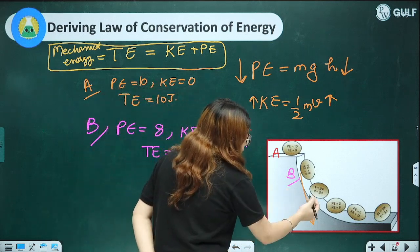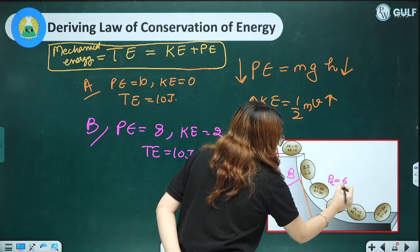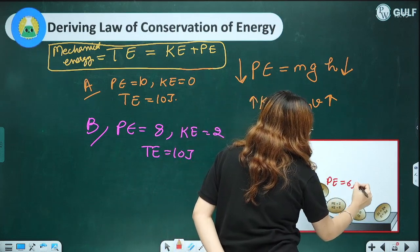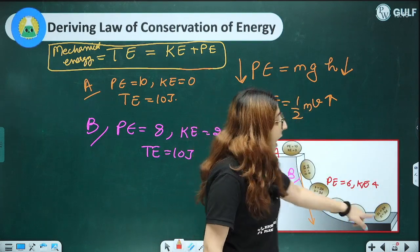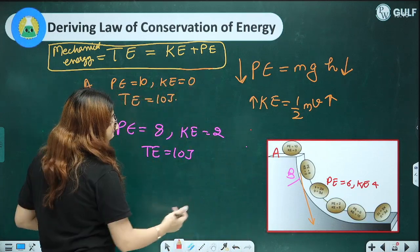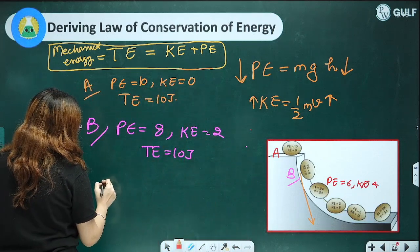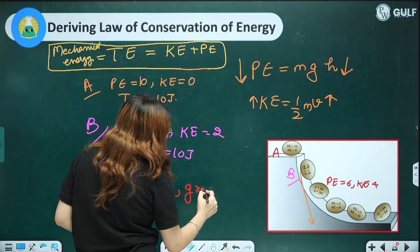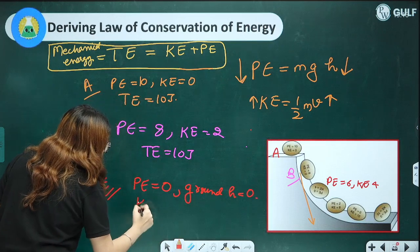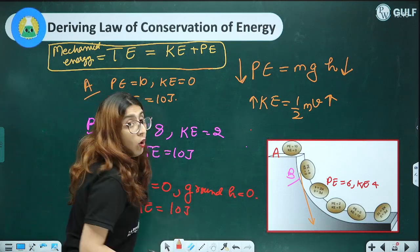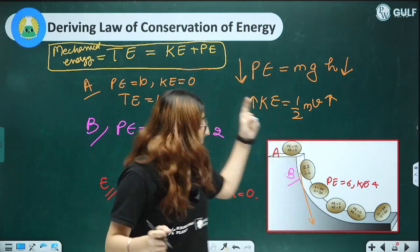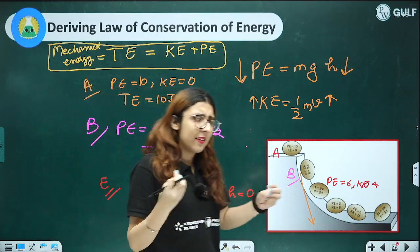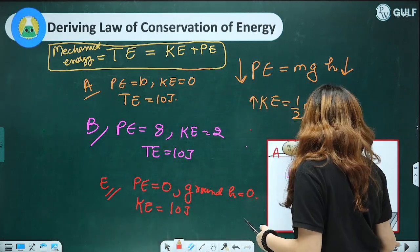This demonstrates how in a falling stone scenario, potential and kinetic energy transform from one form to another while the total remains the same — validating the law of conservation of energy.